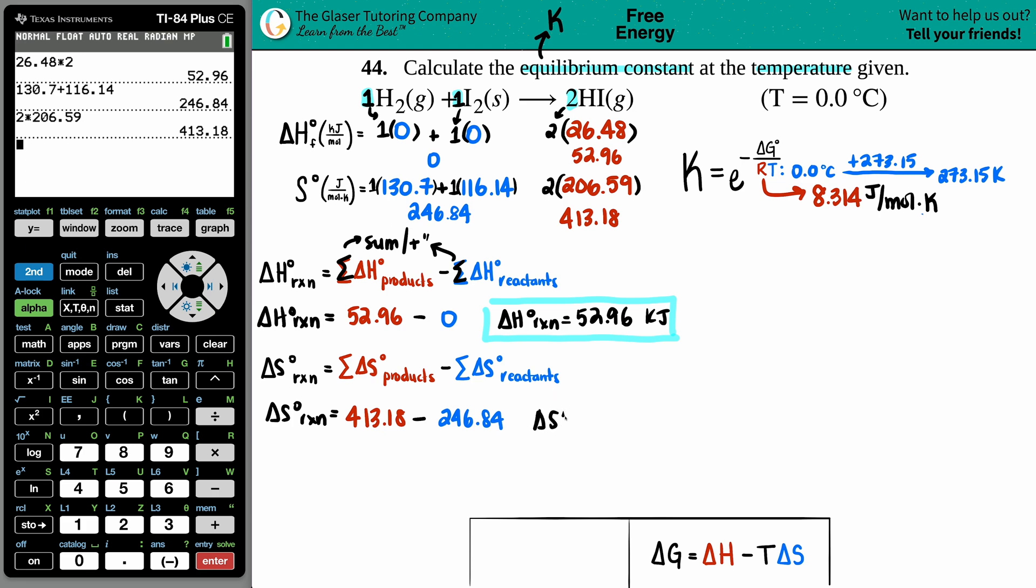Add up the sides, so we have 130.7 plus 116.14. That's 246.84. And then two times 206.59 - that's 413.18. Delta S for the whole entire reaction equals 413.18 minus 246.84, which gives us 166.34 joules per kelvin.